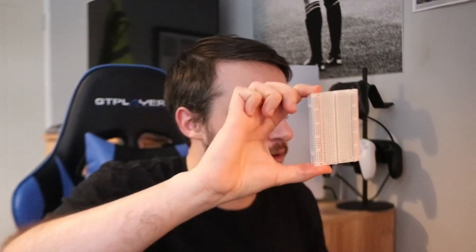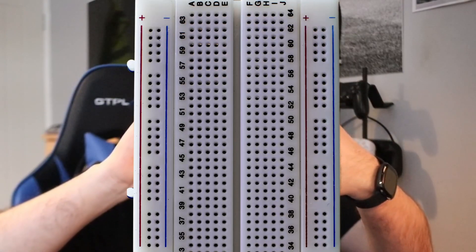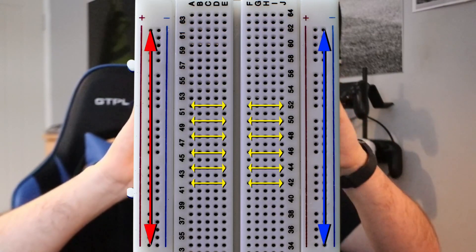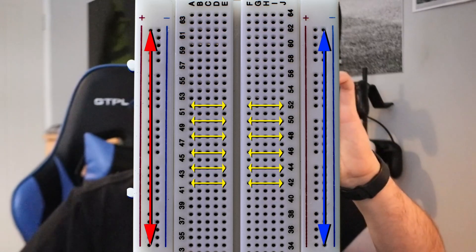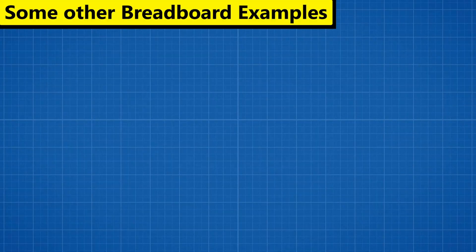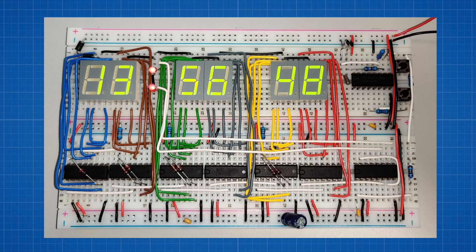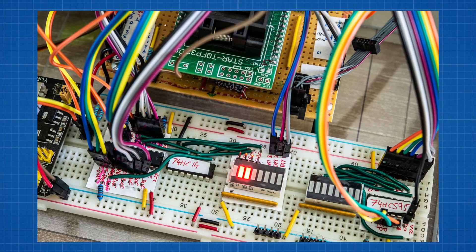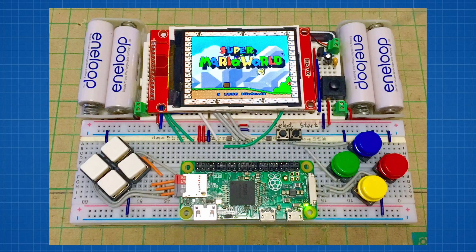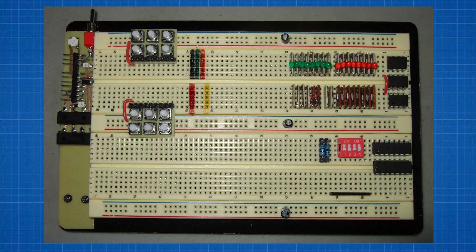Breadboards are a way of prototyping, as I was saying with your dev board. In the middle, these are connected horizontally, and on the edges they're connected vertically. They're basically a way of prototyping your microcontrollers with sensors and hooking them all together. You'd have your dev board and your breadboard side by side and hook everything up with wires to make sure everything's working before it goes to be fully manufactured.